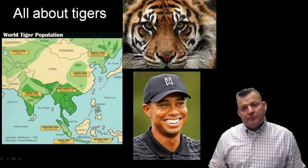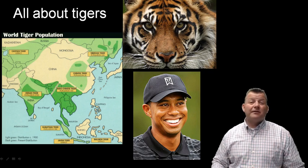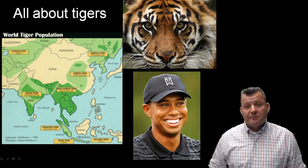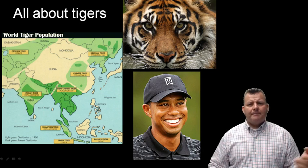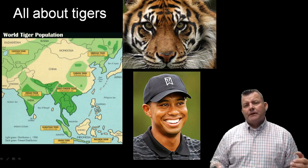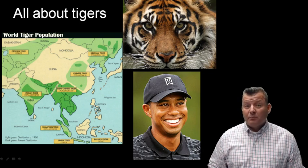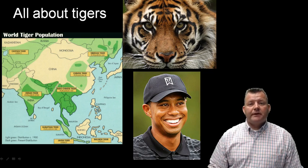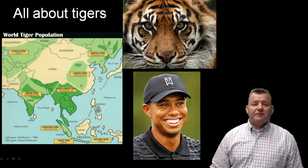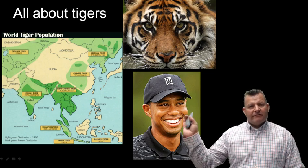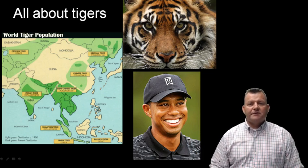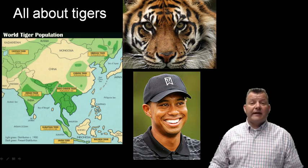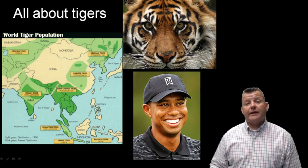Now clearly in that example there was a lot of extraneous, incoherent material that violated the coherence principle. I started off talking about the map and where tigers are from, talked about where they're not from, and talked a little bit about the tiger pictured and my experience taking that picture. But then I went off on a whole other tangent about Tiger Woods and golf, which was totally not necessary for the lesson about actual tigers.